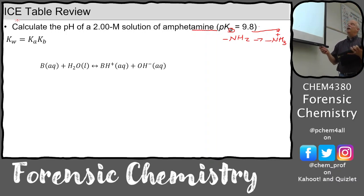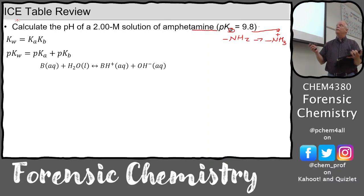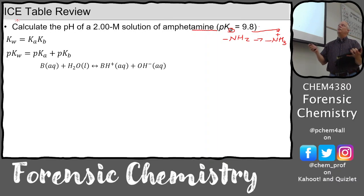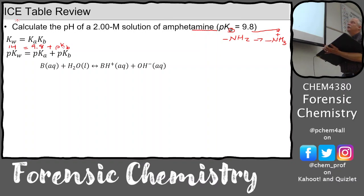Ka and Kb are related through Kw: Ka × Kb = Kw = 10⁻¹⁴. Taking the minus log of both sides gives pKa + pKb = 14. So if pKa = 9.8, then pKb = 14 − 9.8 = 4.2. Equivalently, Kb = 10⁻¹⁴ / 10⁻⁹·⁸.